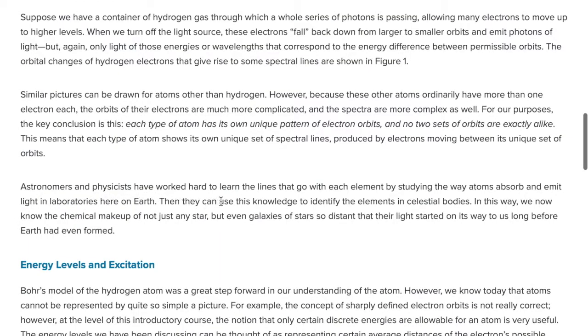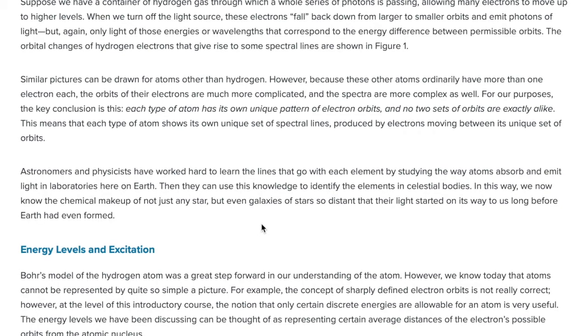Astronomers and physicists have worked hard to learn the lines that go with each element by studying the way atoms absorb and emit light in laboratories here on Earth. They can use this knowledge to identify elements in celestial bodies. In this way, we now know the chemical makeup of not just any star, but even galaxies of stars so distant that their light start on its way to us long before the Earth had even formed. Galaxies. If other galaxies are even real, I'm not sure that they're even real anymore. I think these guys could be making up pictures. But if they are real, the galaxy, if you see a galaxy, is just one point of light. And so how are you delineating between the different stars? So you have, it's a thousand fingerprints on one area on top of each other. And then on top of that, you have millions of stars on top of one another. And you're going to be able to distinguish between different Fraunhofer lines? You got to be kidding me.